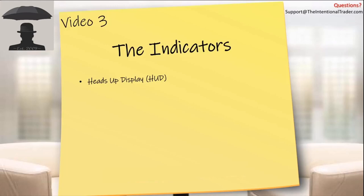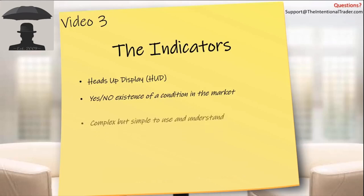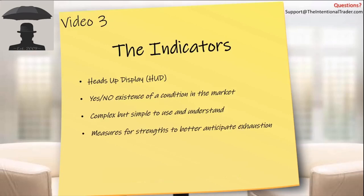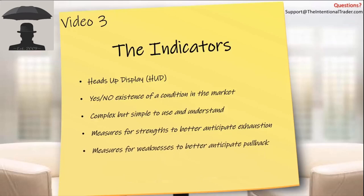On the current bar we give you yes or no — whether a condition exists in the market or not, no shades of gray. These are extremely complex indicators and it's very easy to look at them and think that they are too simple to be powerful. We spent a lot of time making them simple to use but extremely powerful. We're constantly measuring for strength in the market so that we can anticipate when that strength is going to become exhausted, and then we're measuring for weaknesses to better anticipate when the exhaustion is complete and we can expect a pull back.